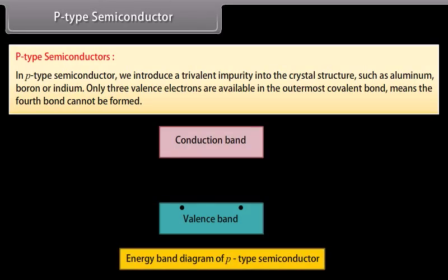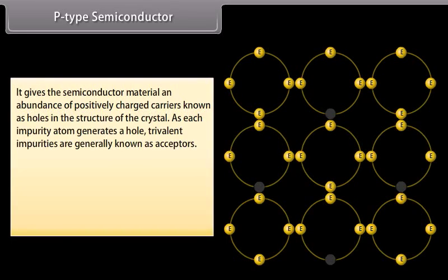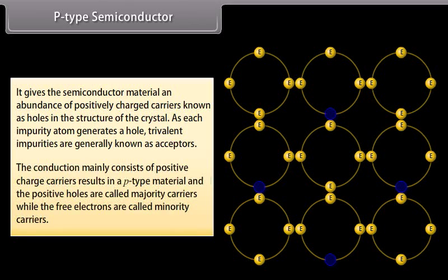In P-type semiconductors, we introduce a trivalent impurity into the crystal structure such as aluminium, boron or indium. Only three valence electrons are available in the outermost covalent bond, meaning the fourth bond cannot be formed. This gives the semiconductor material an abundance of positively charged carriers known as holes. As each impurity atom generates a hole, trivalent impurities are generally known as acceptors. The conduction mainly consists of positive charge carriers, resulting in a P-type material where positive holes are called majority carriers and free electrons are called minority carriers.